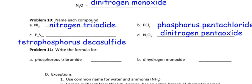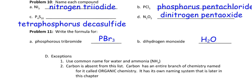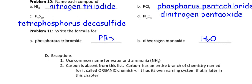So go ahead and write the formula for the next two. So go ahead and pause this and rejoin me when you're done. So hopefully you got PBr3 for phosphorus tribromide and H2O for dihydrogen monoxide. But wait a minute. That looks like water. Well, you're right. It is water. Do we typically call it dihydrogen monoxide? No, we don't. We call this an exception. Use common name for water and ammonia.